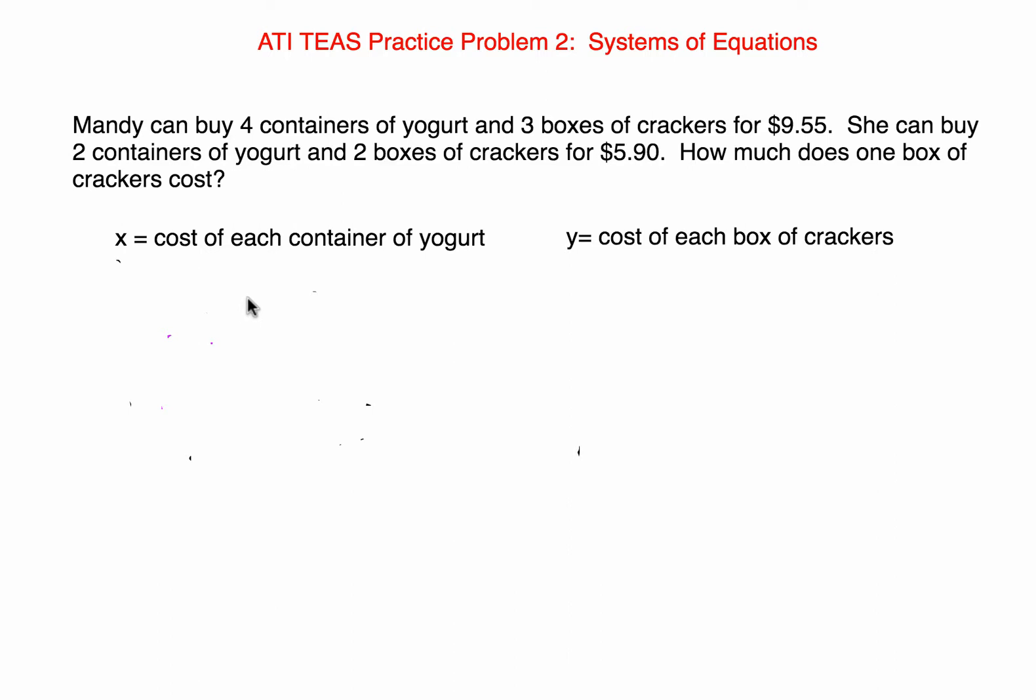Mandy can buy four containers of yogurt and three boxes of crackers for $9.55. She can buy two containers of yogurt and two boxes of crackers for $5.90. How much does one box of crackers cost?